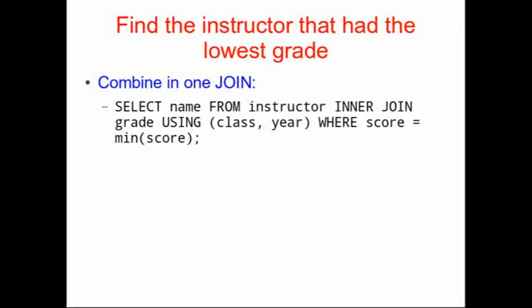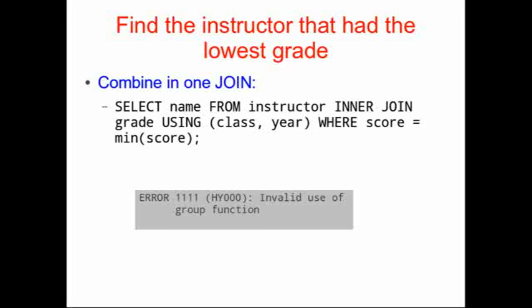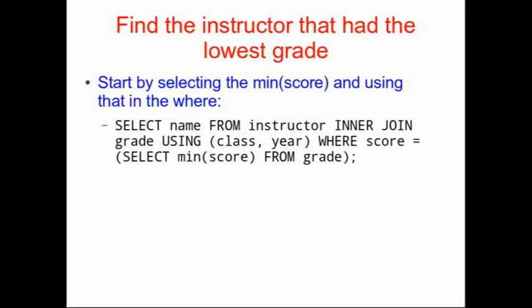We can combine those in one statement. A naive approach would be to say let's just choose the instructor where the score is equal to the minimum of score. If you build this select statement and run it, you get an error because this is not a valid statement — the MIN(score) command can't be used as part of a WHERE clause like this. Instead, we need to build our select statement from the ground up, starting by selecting the minimum score from grade, and use that as a nested select as a subquery.